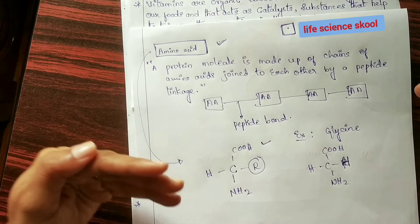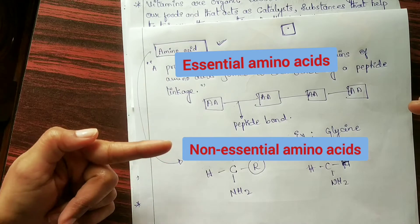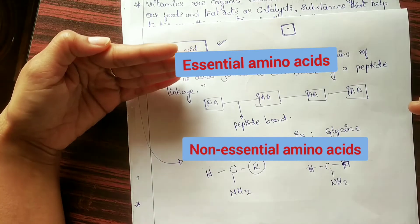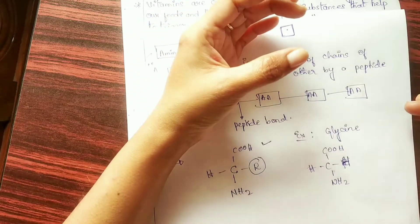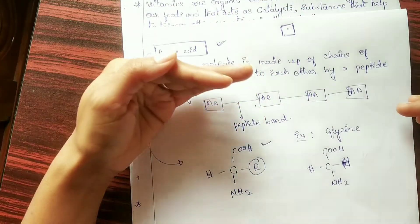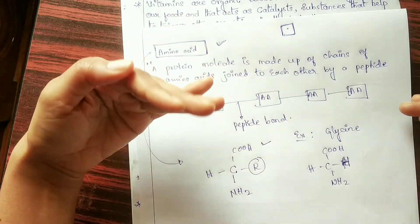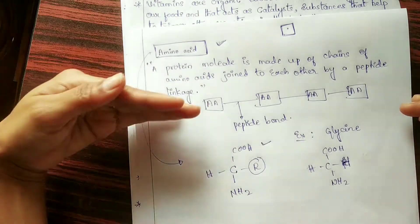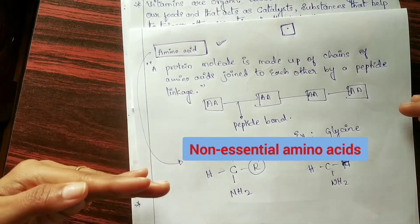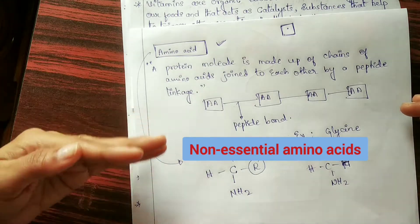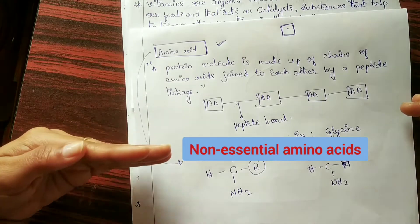Proteins are divided into essential amino acids and non-essential amino acids. Essential amino acids are those which cannot be synthesized by our body to meet physiological needs, and so must be supplied through the diet — examples include threonine, leucine, lysine, methionine, phenylalanine, tryptophan and valine. Non-essential amino acids are those that can be synthesized by our body — examples include alanine, arginine, aspartic acid, glutamine, glycine, proline, serine and tyrosine.